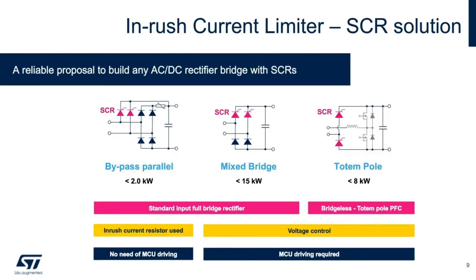There are several implementations of SCRs for inrush current limiting that can benefit a power supply, depending on the topology, power level, and control complexity. The simplest method is the bypass parallel configuration, useful to power levels up to about two kilowatts, with benefits of simple self-driving control but still using a series resistor to limit the initial inrush current. More complex solutions, such as the mixed bridge with SCRs or SCR-controlled totem pole PFC, can eliminate the current limiting resistor altogether but require a microcontroller to implement smart algorithms. Much higher power levels can be optimized with these topologies, and we'll touch on all three.